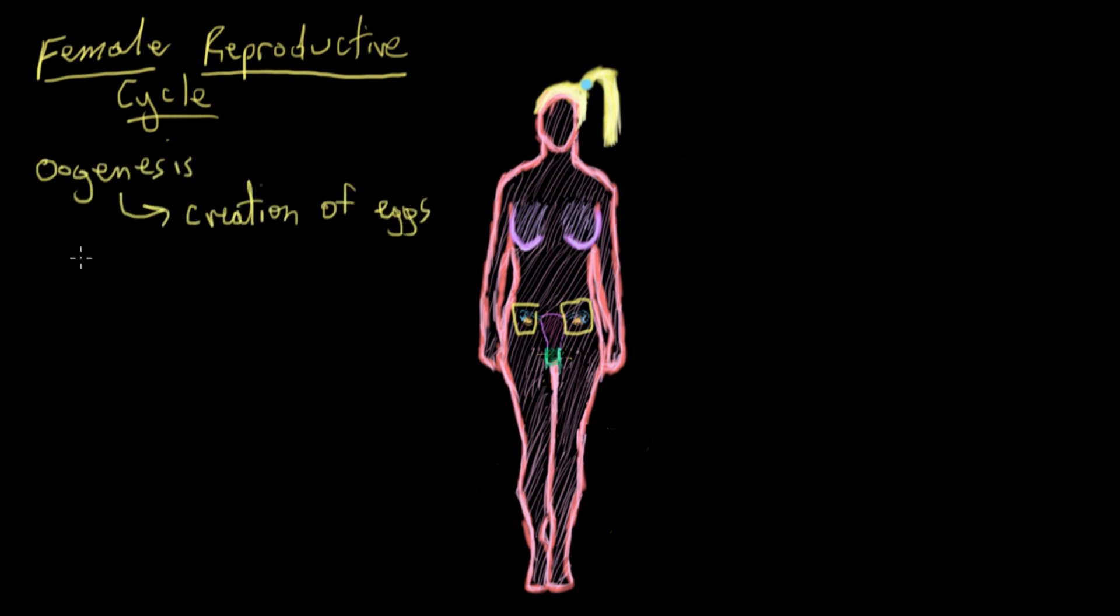This process of egg creation is called oogenesis. Then, once she grows up a bit and reaches puberty, her reproductive cycle will start, and one egg in that egg supply in her ovaries will mature, or become activated, each month, and that allows it to be fertilized by sperm.